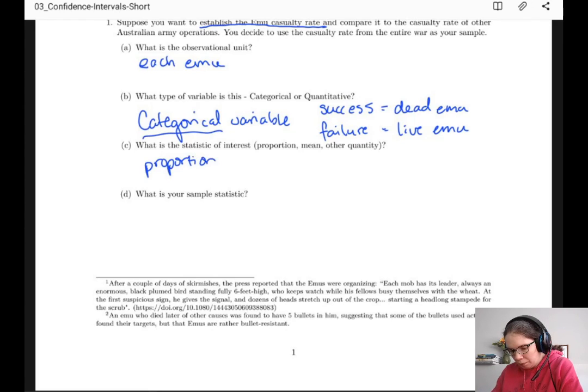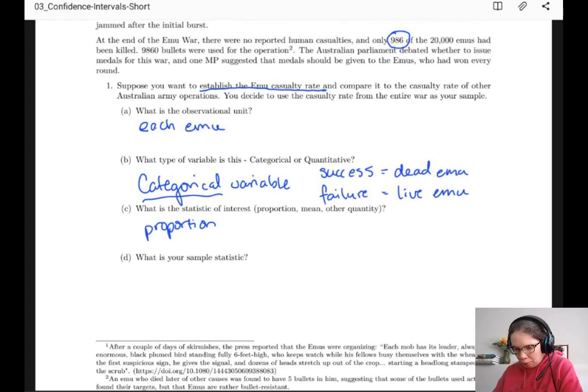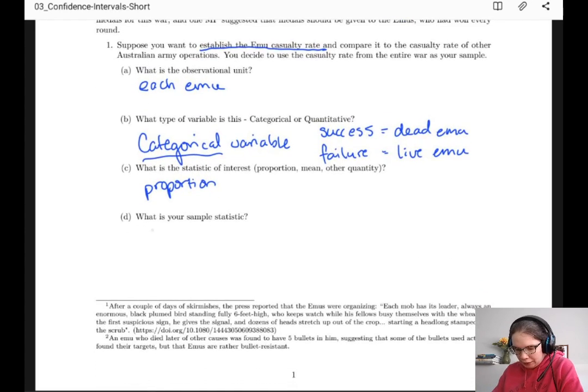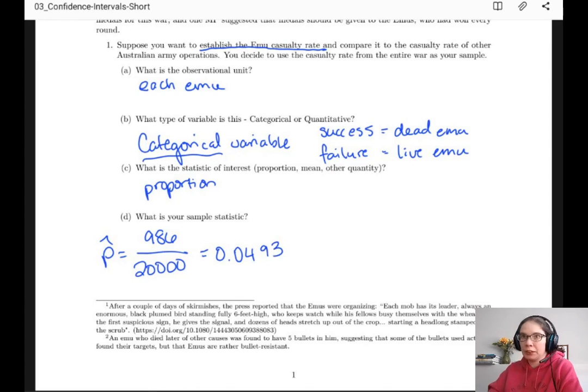And we are going to calculate that proportion as 986 over 20,000. And that's our p hat. If we run that through a calculator, we get 0.0493. So that's our sample statistic.